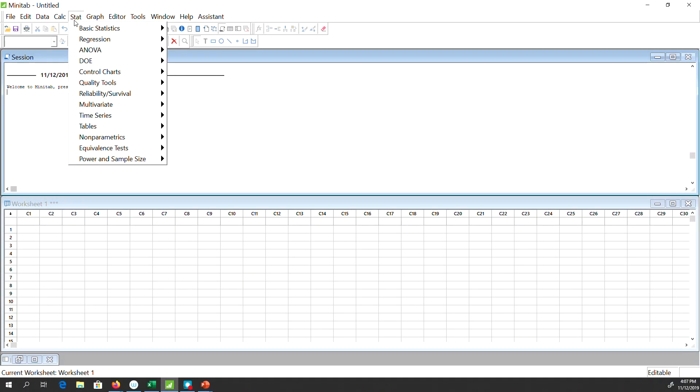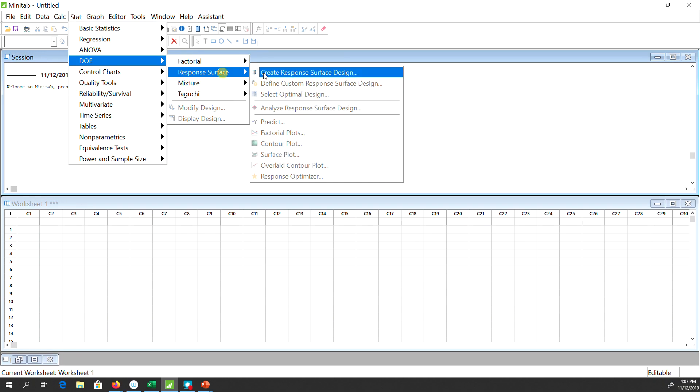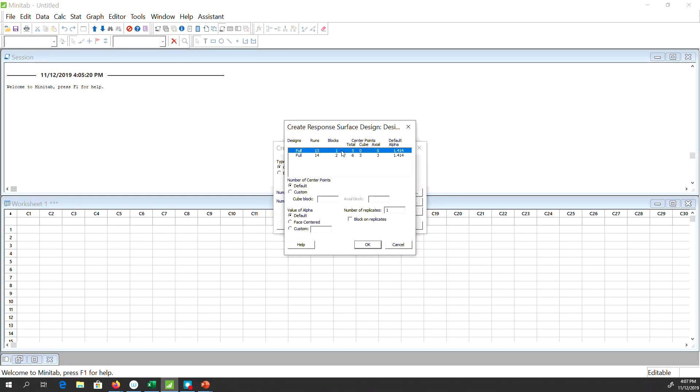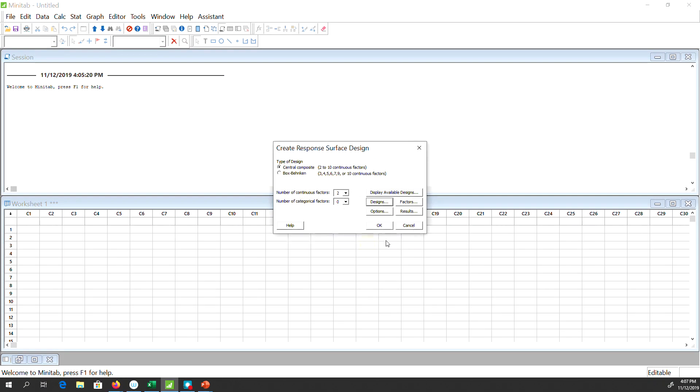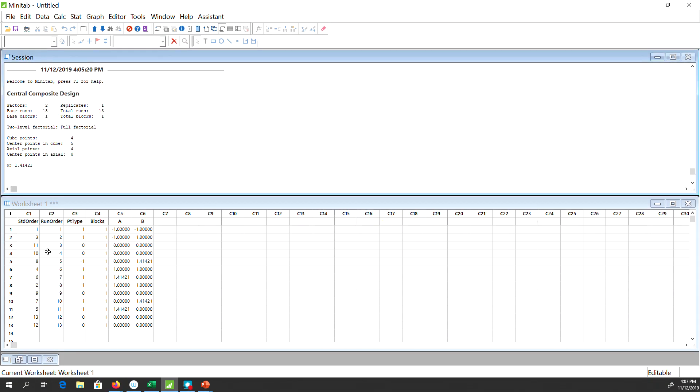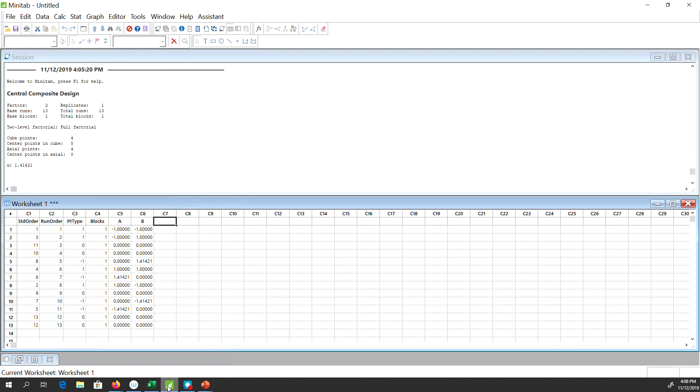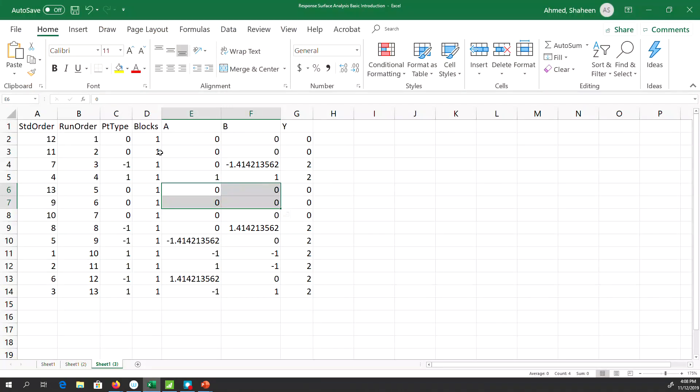If you go to Stat in Minitab, DOE, Response Surface, Create Response Surface Design, let's say just a two-factor study. Let's see what design is available - use a full factorial design, hit okay. Minitab will create the experiment for you with factor A levels, factor B levels, and then you collect that data Y. I have copied this in Excel, and this is my response corresponding to this level of A and B.